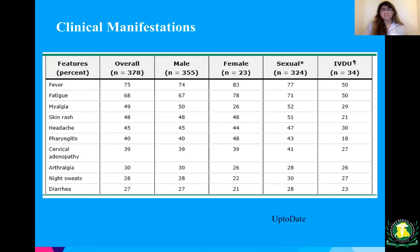This chart from UpToDate shows those common clinical manifestations: fever being one of the most common, followed by fatigue, myalgia, skin rash, headache, pharyngitis, sore throat, and cervical adenopathy. One of the questions from my first lecture had a patient presenting with cervical adenopathy, arthralgia, night sweats, and diarrhea. The chart also divides demographics by male, female, sexual acquisition, and IV drug acquisition.